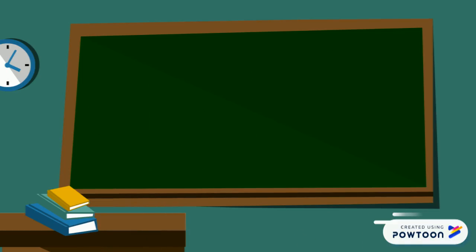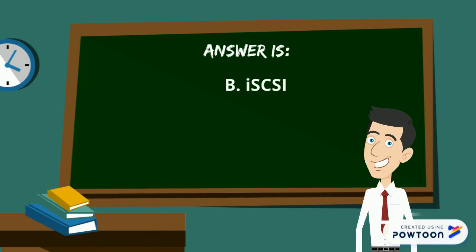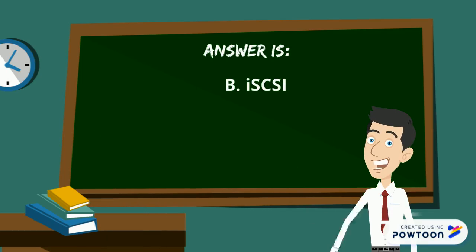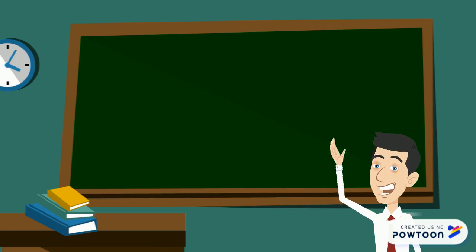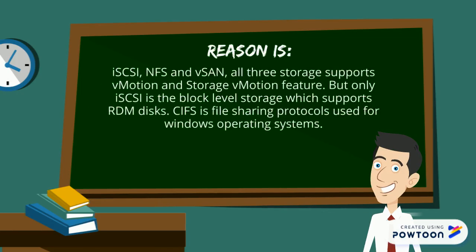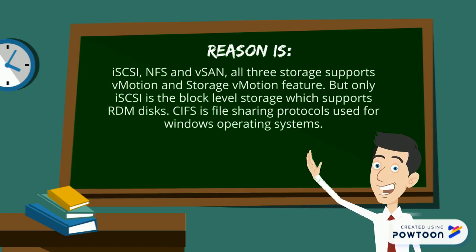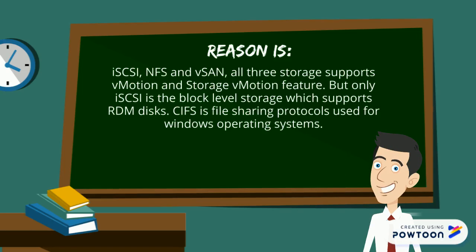The answer is iSCSI. Let's understand the reason why. iSCSI, NFS, and vSAN all support vMotion and storage vMotion. However, only iSCSI is a block-level storage protocol, which is what supports RDM disks.